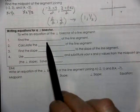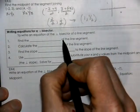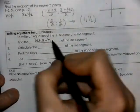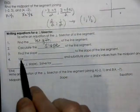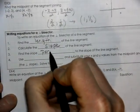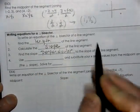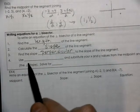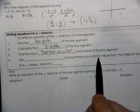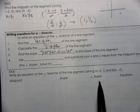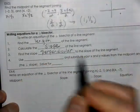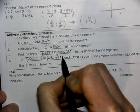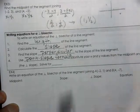So we're going to find the length or distance of the segment. We're going to calculate the slope. We're going to find the slope perpendicular to the slope of our segment. And we're going to use, substitute your x and y values for the midpoint. We're going to use the point slope formula and we're going to solve for y.